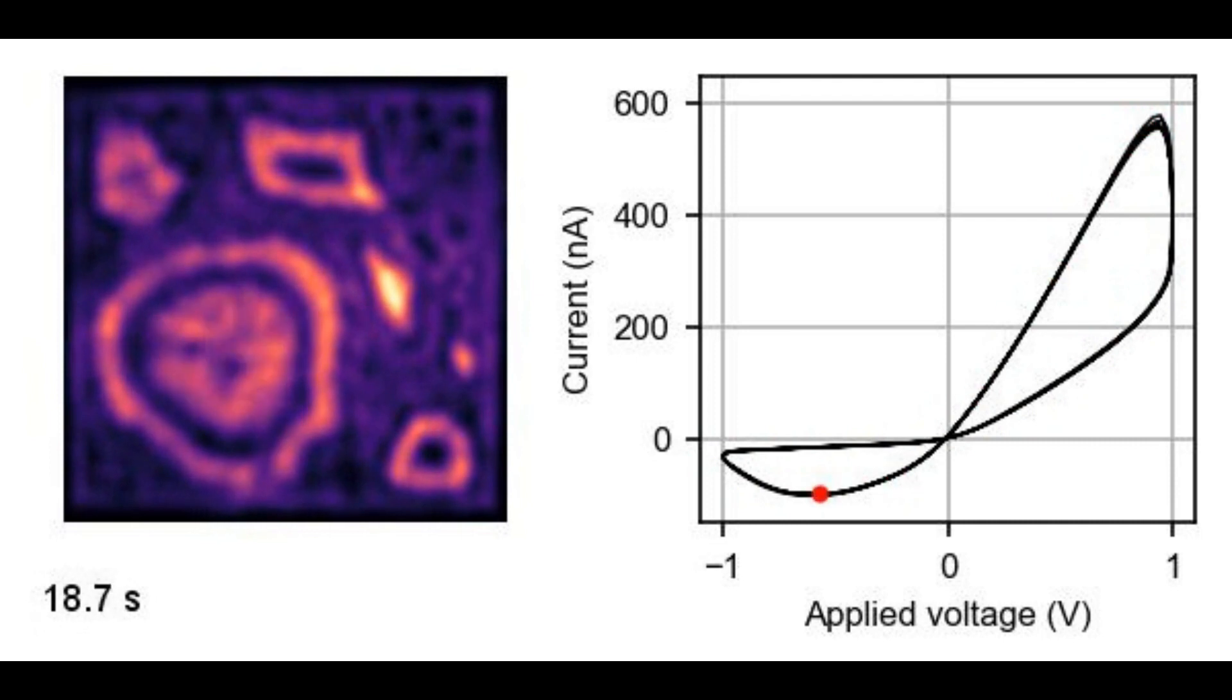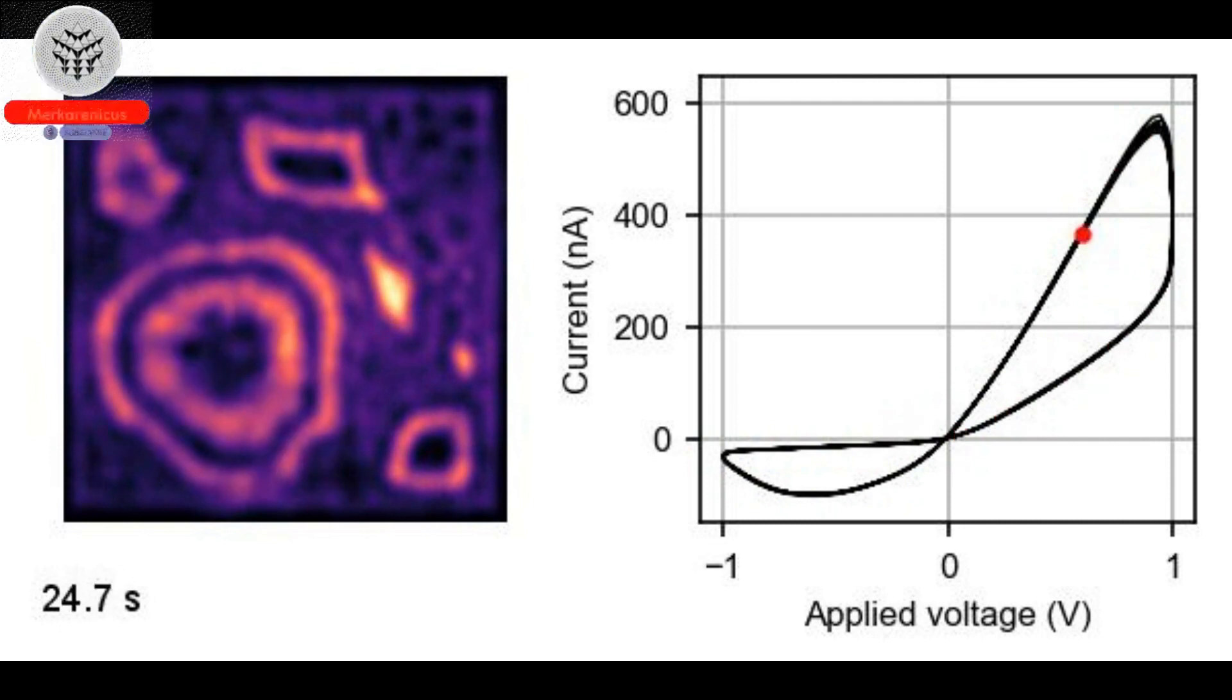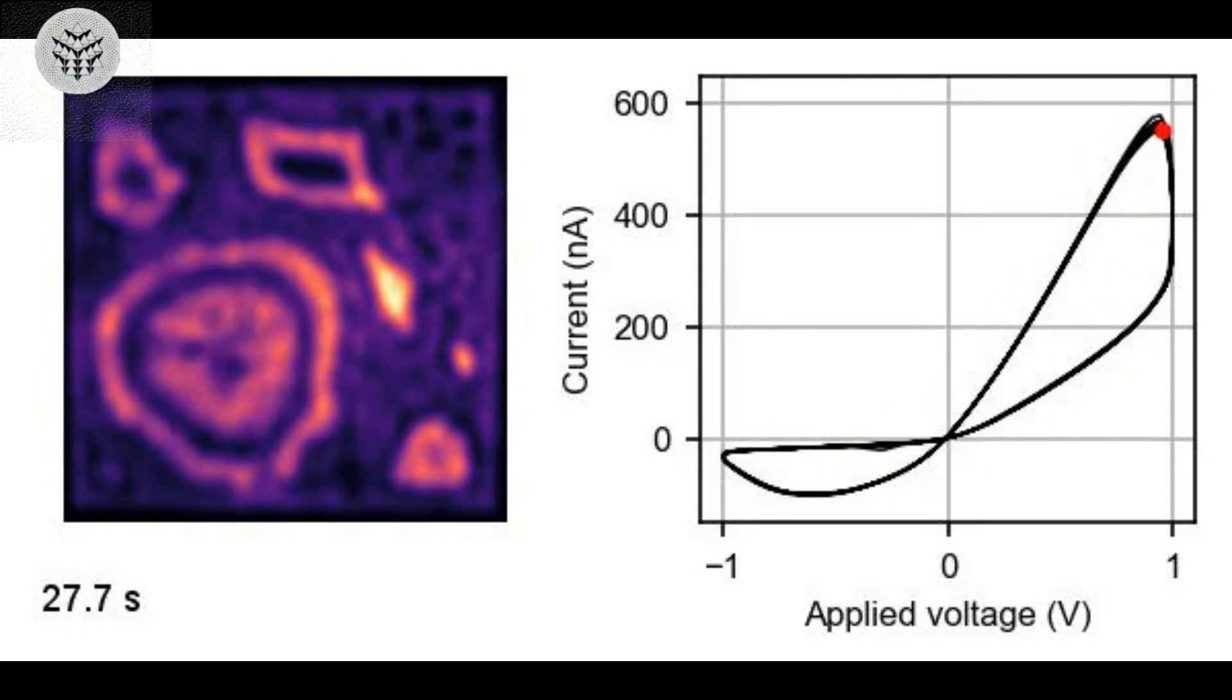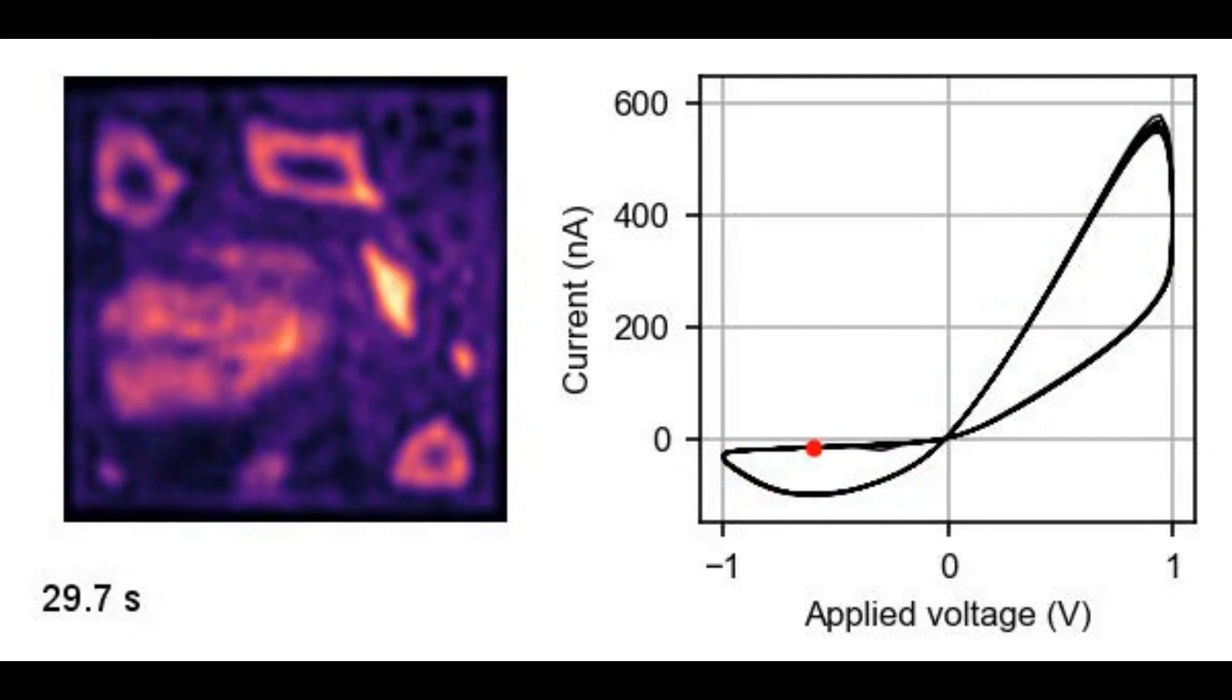The rising graphite layer enhances conductivity, causing the device to switch to its on memory state. This state is retained even in the absence of a current as the graphite layer remains elevated, effectively remembering its previous state.